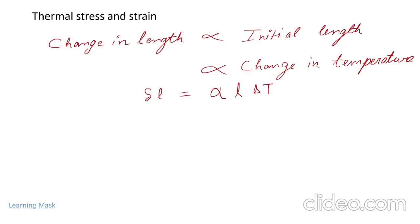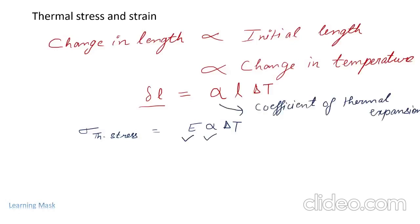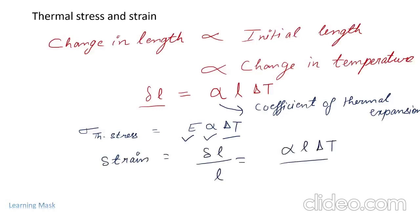Now, the expression for thermal stress is: thermal stress = E·α·ΔT, where E is the modulus of elasticity, α is the coefficient of thermal expansion, and ΔT is the change in temperature. For thermal strain, we write strain as ΔL/L. Substituting ΔL = α·L·ΔT, strain comes out to be α·ΔT. So this is the expression for thermal strain.